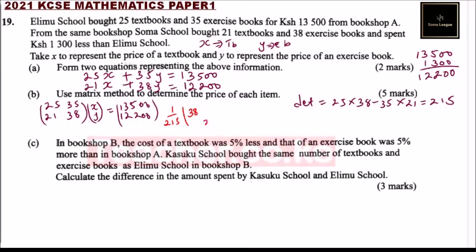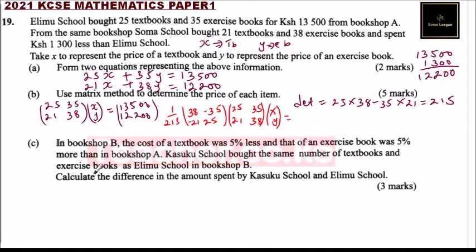After interchanging the main diagonal elements, we introduce negatives on the other diagonal: minus 35 and minus 21. So the inverse matrix has 38, minus 35 on the first row and minus 21, 25 on the second row, all multiplied by 1 over 215. This equals x and y on the left side.